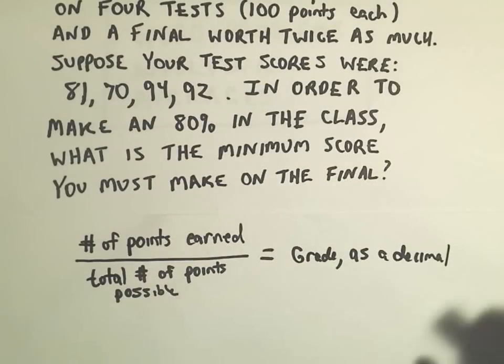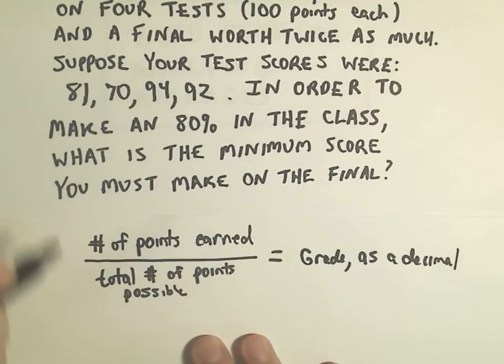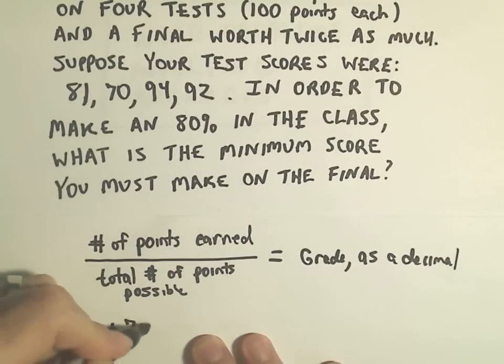Okay, so in this case, on the first test we know that we made an 81. On test 2, we made a 70. On test 3, we made a 94.